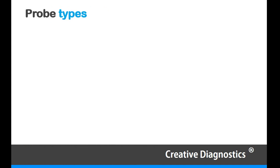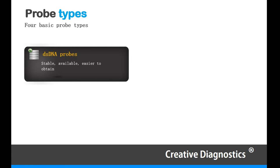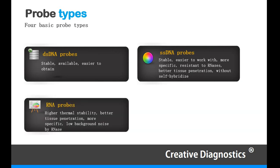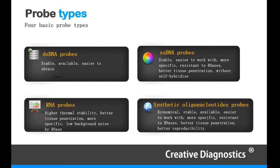There are essentially four types of probe that can be used in performing in-situ hybridization: double-stranded DNA probes, single-stranded DNA probes, RNA probes, and synthetic oligonucleotide probes.